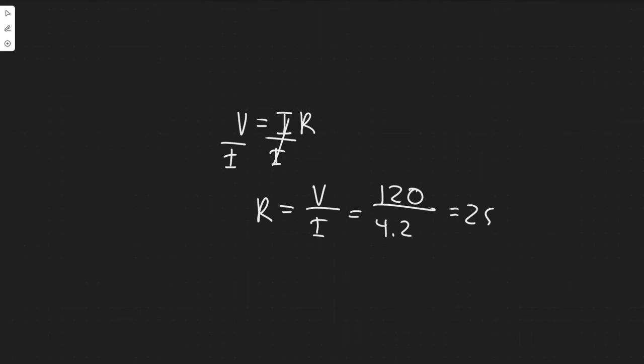So you're going to get 28.57. You can round however you want. I'm going to round to the whole number. So about 29, and the unit for resistance is Ohms, so it looks like this. So your answer is going to be about 29 ohms.